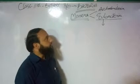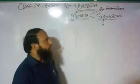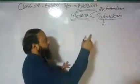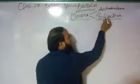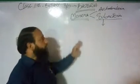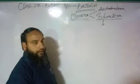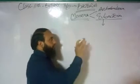Kingdom Monera actually comprises two main groups. One is Archaebacteria and one is Eubacteria. We are here actually dealing with Eubacteria.